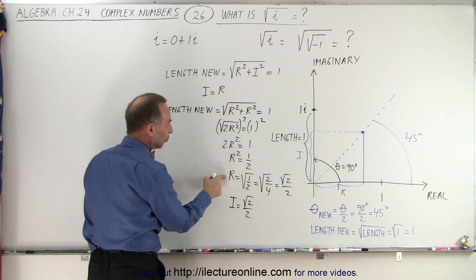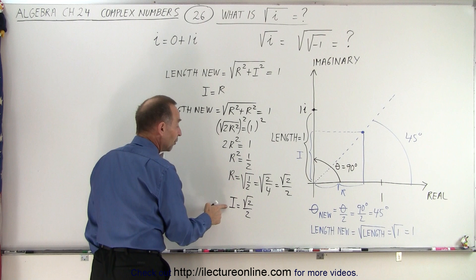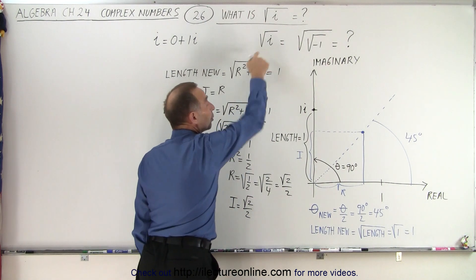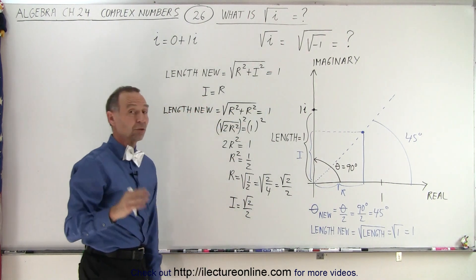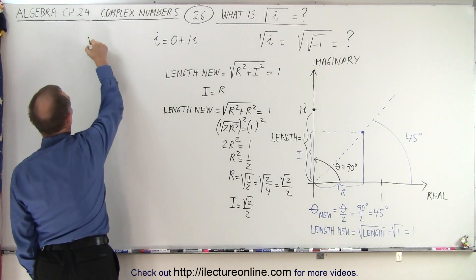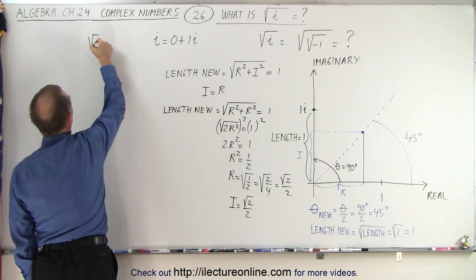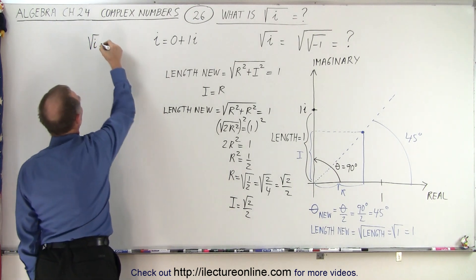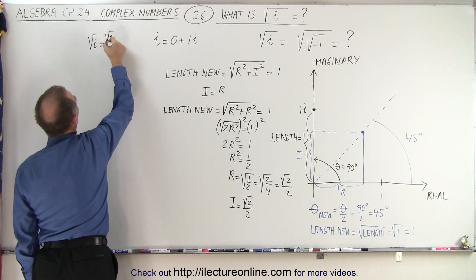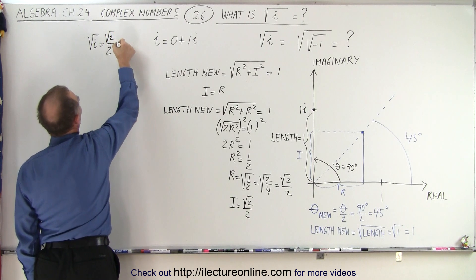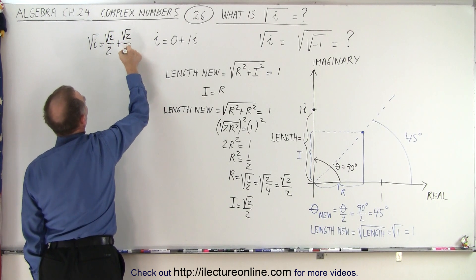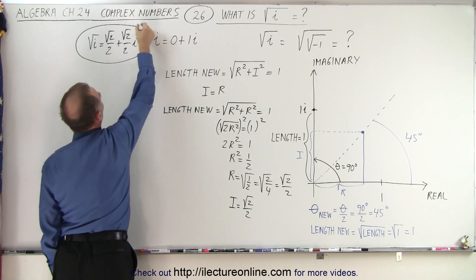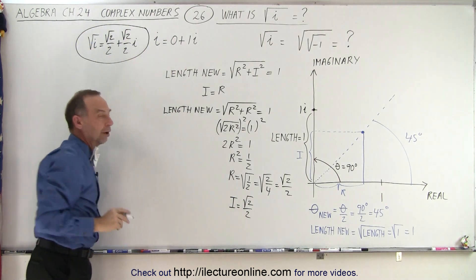Now these are the magnitude of the real part and the magnitude of the imaginary part of the square root of i. So therefore we know that the square root of i must equal the real part, which is √2/2, plus √2/2 times i. And that is the square root of i.